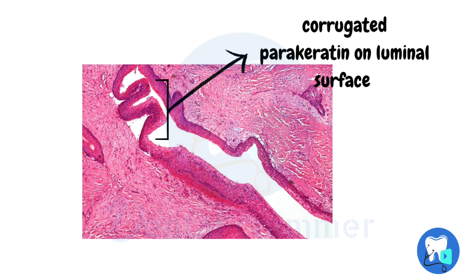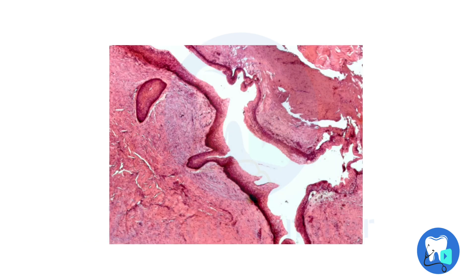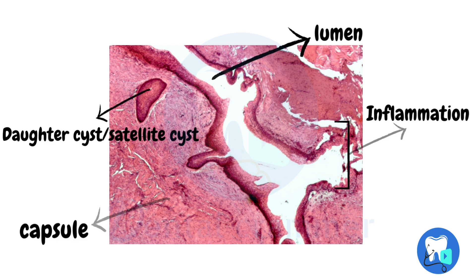Corrugated parakeratin is present on the luminal surface of the cyst. One of the most important histopathological features of OKC is the presence of daughter cysts within the connective tissue capsule. Probably due to these daughter cysts, OKC has a high recurrence rate, as connective tissue left behind might result in reoccurrence.